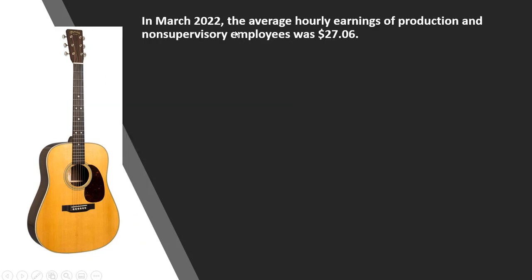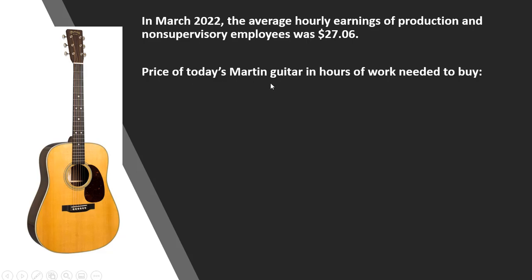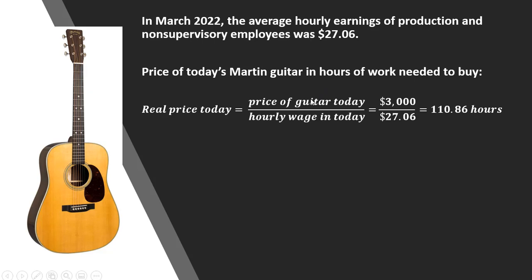In March 2022, the average hourly earnings of production and non-supervisory employees was $27.06. The price of today's Martin guitar in hours of work is the price of the guitar today divided by the average hourly wage today, and we get an answer of approximately 110 to 111 hours.